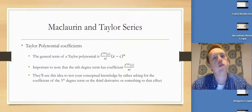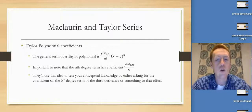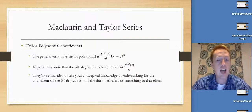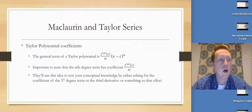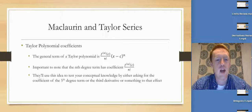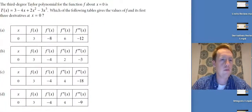Taylor polynomial coefficients: the general term is f to the nth derivative at c, divided by n factorial, times (x minus c) to the n. The big deal is the nth-degree term has coefficient equal to the nth derivative at c over n factorial. So if you want to find the fourth derivative, look for the fourth-degree term. This also comes up as a concept question, and they may use it to have you construct a Taylor polynomial by giving you values of f, f prime, f double prime, and so on.